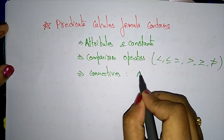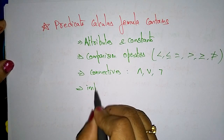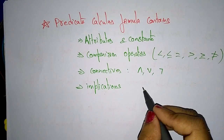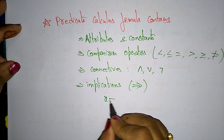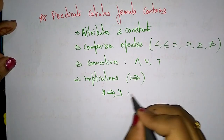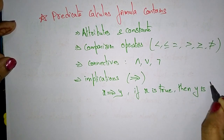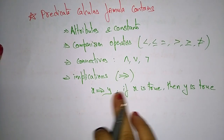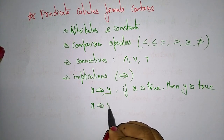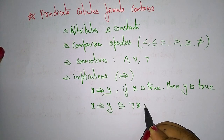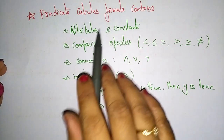It also contains connectives — AND, OR, NOT — and implications. The implication symbol means: if X implies Y, then if X is true, then Y is true. X implies Y can also be written as NOT X OR Y. Both expressions give the same result.